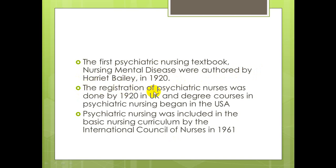The first registration of psychiatric nurses passed in 1925, with U.K. Mansfield Registration in Psychiatric Nursing for restoration occurring in 1920. Psychiatric nursing courses began in 1920 in the U.S. Psychiatric nursing was included as part of the basic nursing curriculum by the International Council of Nurses in 1961.